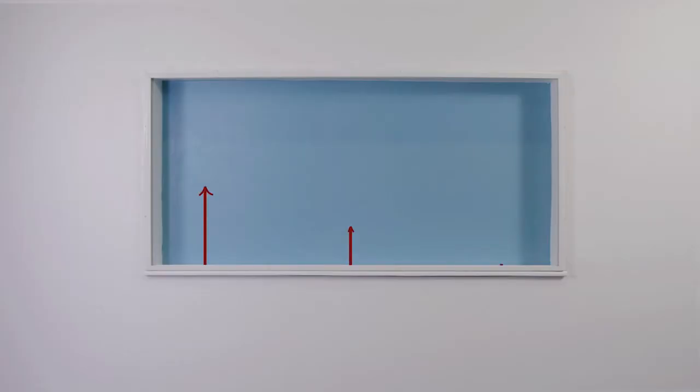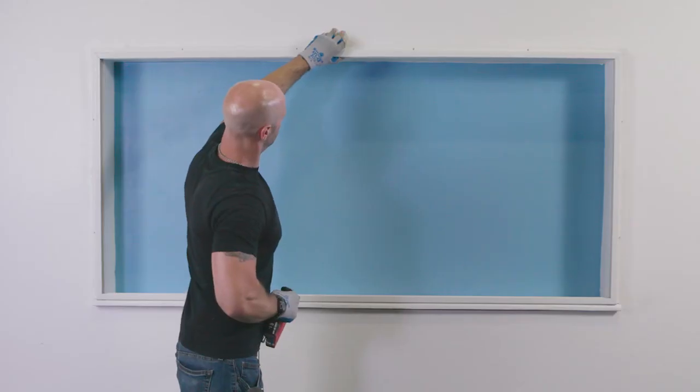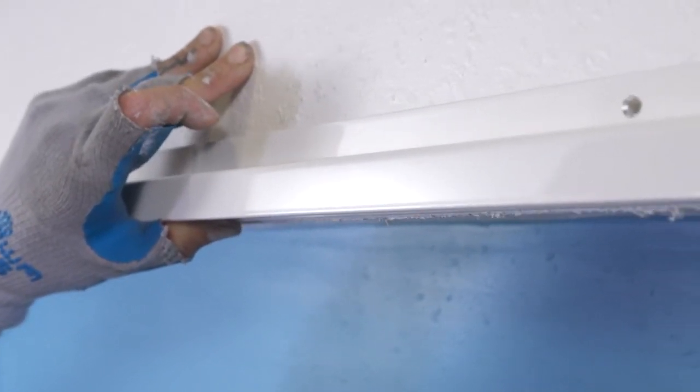Once that's done, measure the distance of the frame in three places to ensure the distance is the same across the frame. It is very important that the frame is straight. The top of the frame has some give to it, allowing you to adjust the height when you screw in the top of the frame.